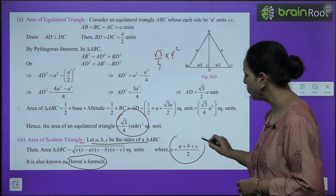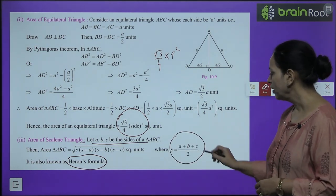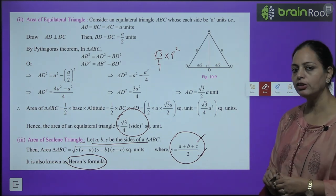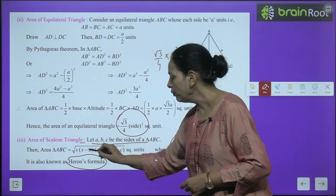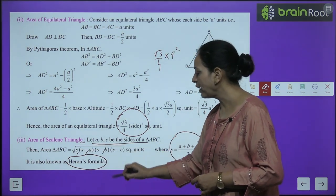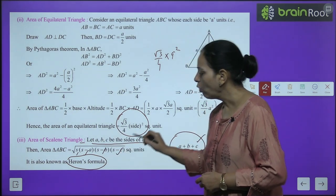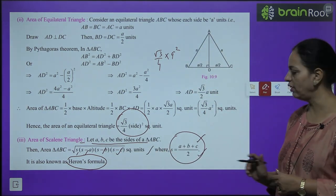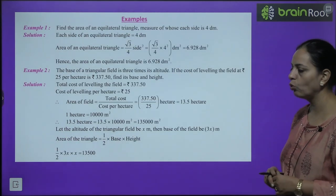Semi-perimeter s = (a + b + c)/2. Then area = √(s × (s−a) × (s−b) × (s−c)). Compute this product and take the square root — that gives the area. It will become clearer when you work through questions.